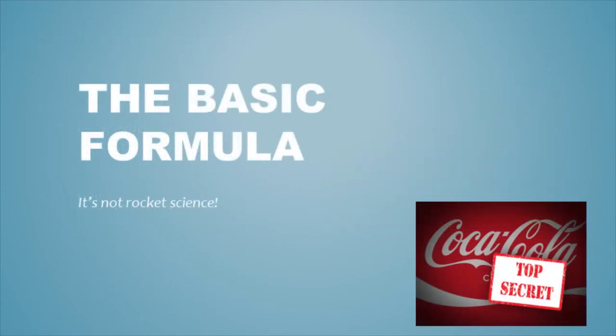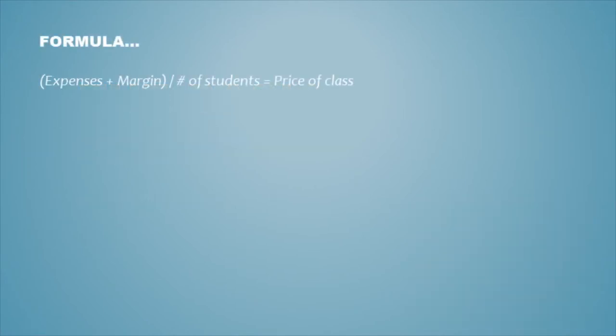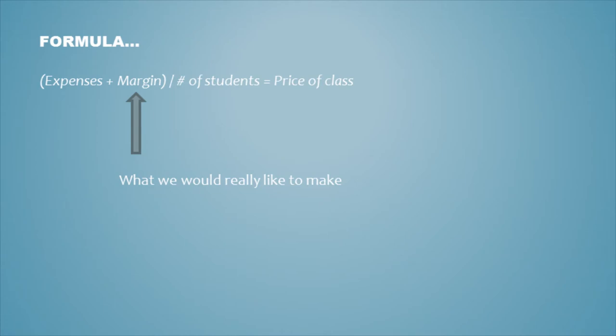Let's start out by looking at the basic formula for calculating the price of a class. The basic formula is: expenses plus margin, divided by the number of students, equals the price of a class. Of course, this is a simplified version of the formula. Margin is the amount of money we would like to make after expenses on the class. Margin is hard to figure out because we won't know the number of students that will show up and register. We estimate this as part of the formula.